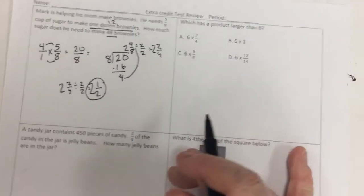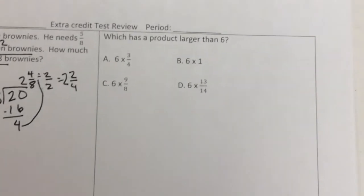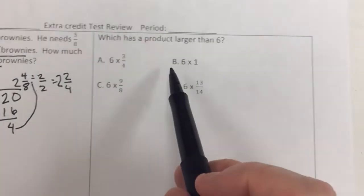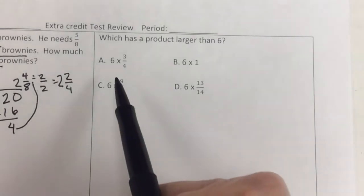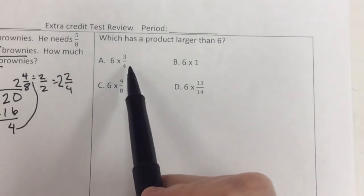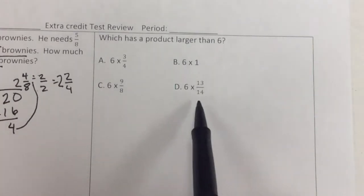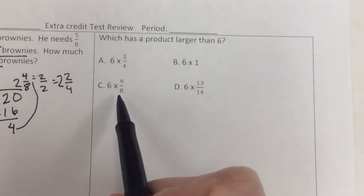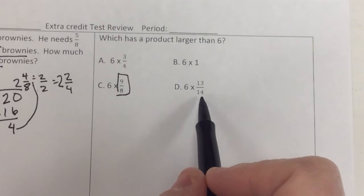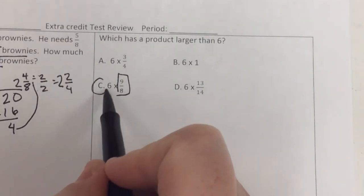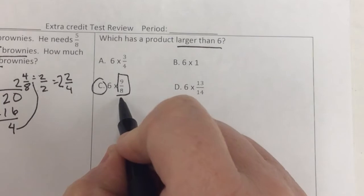Which has a product larger than 6? So what this means, remember, we said 6 times 1 is 6. So for my answer to get bigger, I have to multiply 6 by something bigger than 6. Or bigger than 1. So if I multiply 6 by something smaller than 1, my answer gets smaller. These are both fractions. So I don't see a mixed number anywhere. But this one's tricky. This is an improper fraction. 9/8 is greater than 1 whole. So while those numbers look bigger, it's still less than 1. So your answer is C because this number is larger than 1.